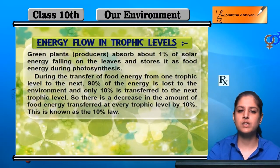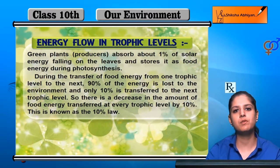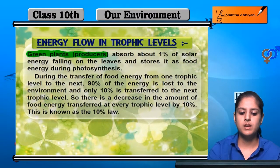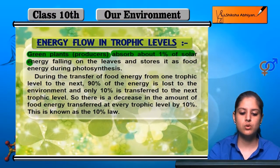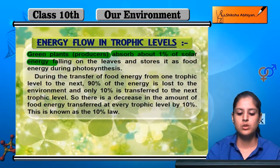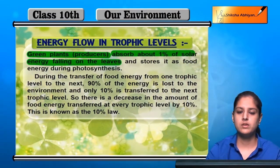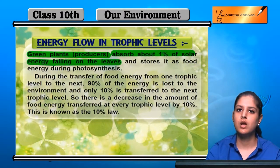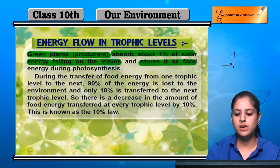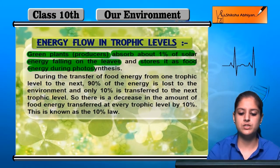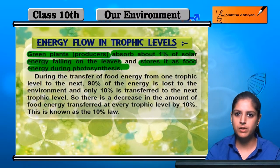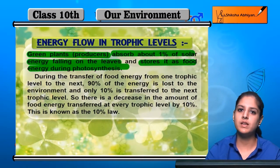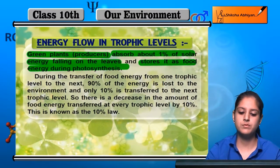Now, in the trophic levels, there is energy flow. How does energy flow? The green plants, or producers, absorb 1% of solar energy from sunlight on their leaves, and then they store it as food energy. So 1% of solar energy is absorbed, and it remains as food energy when photosynthesis occurs.